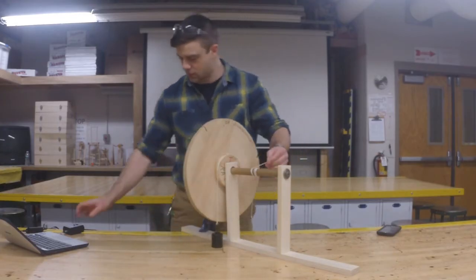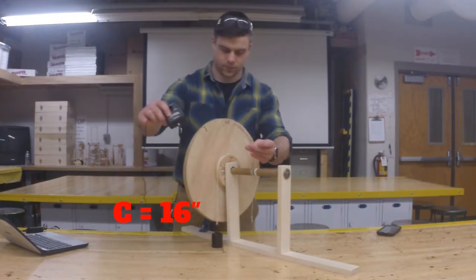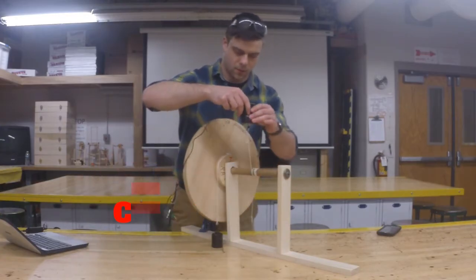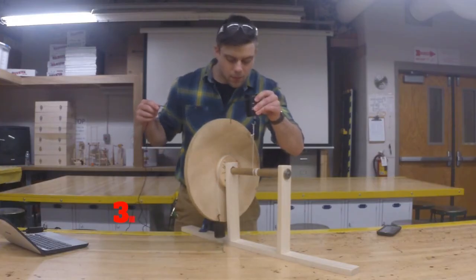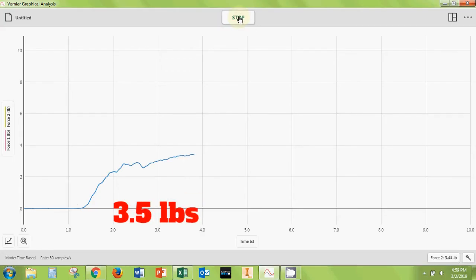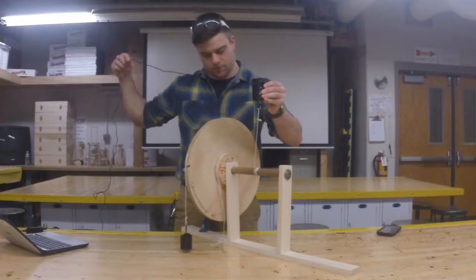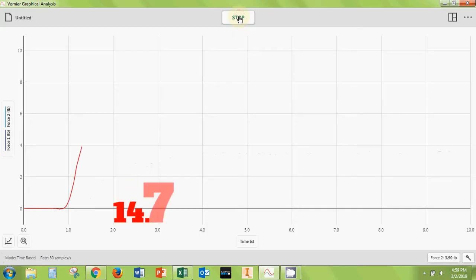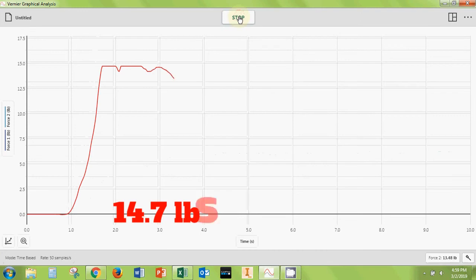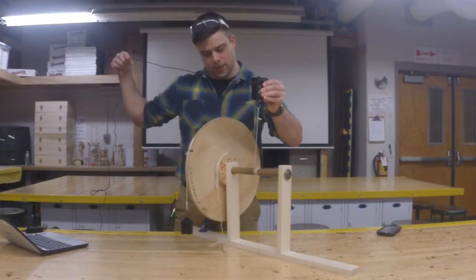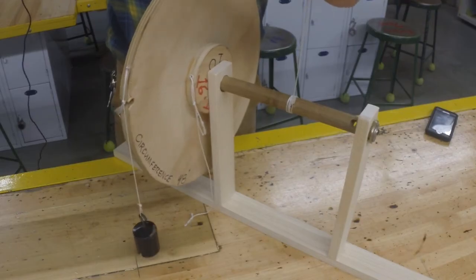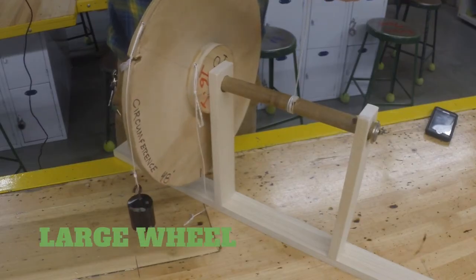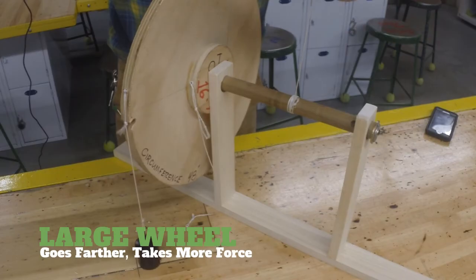This wheel has a 16.1 inch circumference, so it would roll about 16 inches per revolution. Lifting the weight using the small wheel takes about three and a half pounds of force. Now let's see what happens when I try to lift the same weight using the big wheel. The big wheel requires about 14.7 pounds of force to move the same weight. So even though the large wheel covers a lot of distance, the amount of force needed to turn it is much greater than the small wheel.